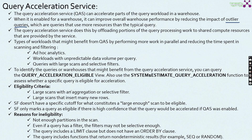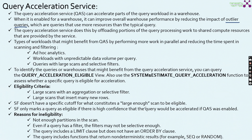The eligibility criteria for QAS includes large scans with aggregations or selective filters, and large scans that insert many new rows. Snowflake does not have a specific cutoff for what constitutes a large enough scan to be eligible. Snowflake only marks a query as eligible if there is high confidence that the query would be accelerated if QAS was enabled — meaning Snowflake takes care of things for you.